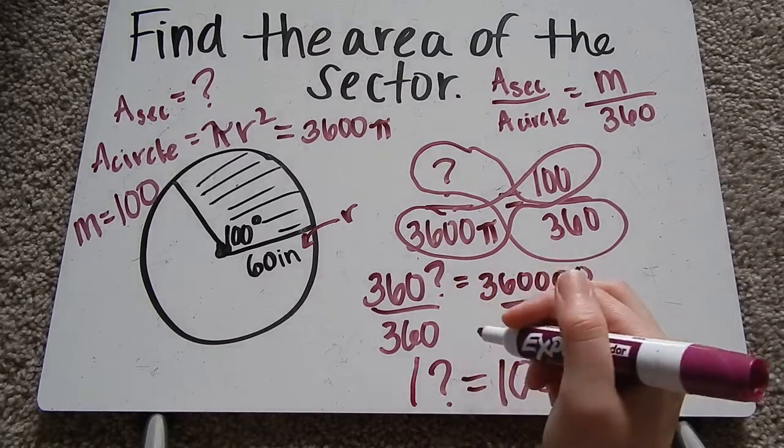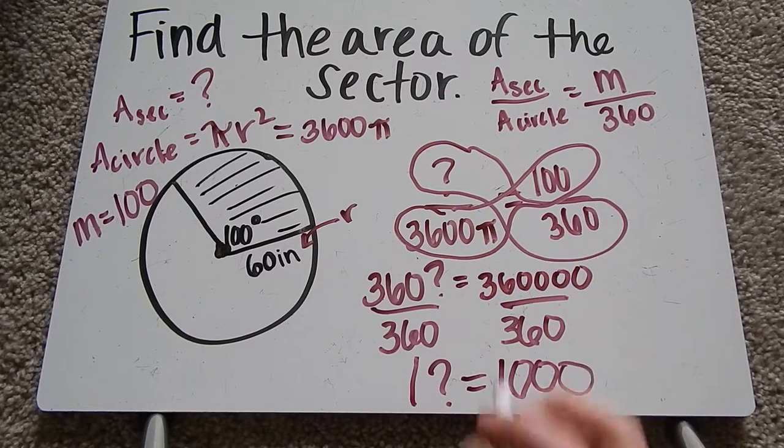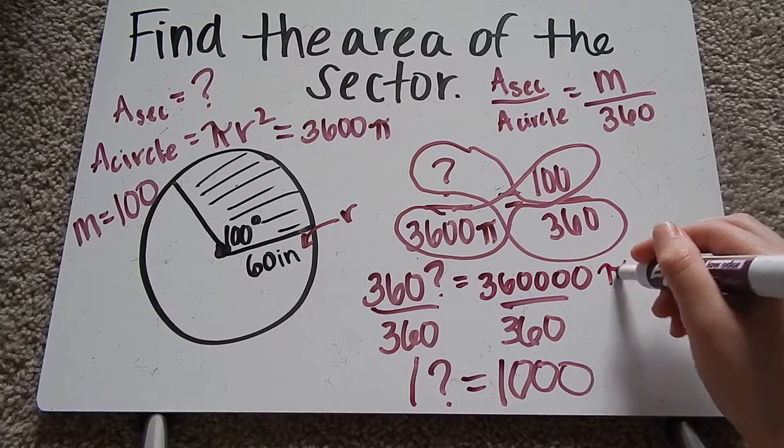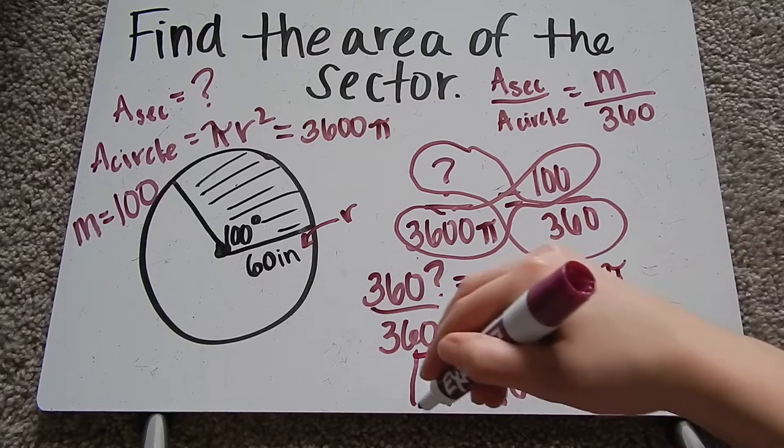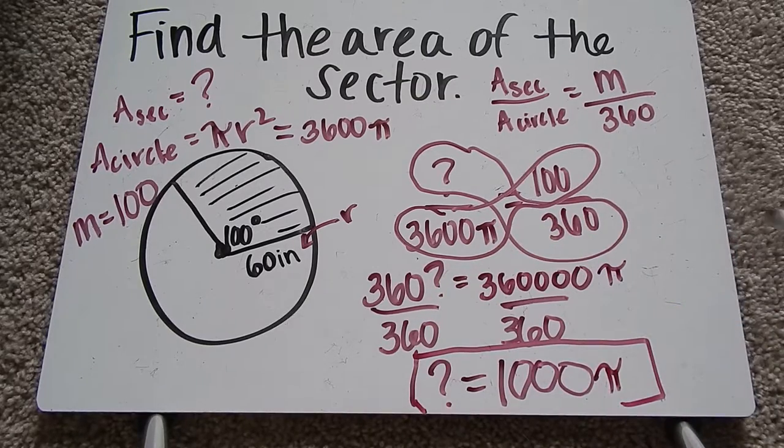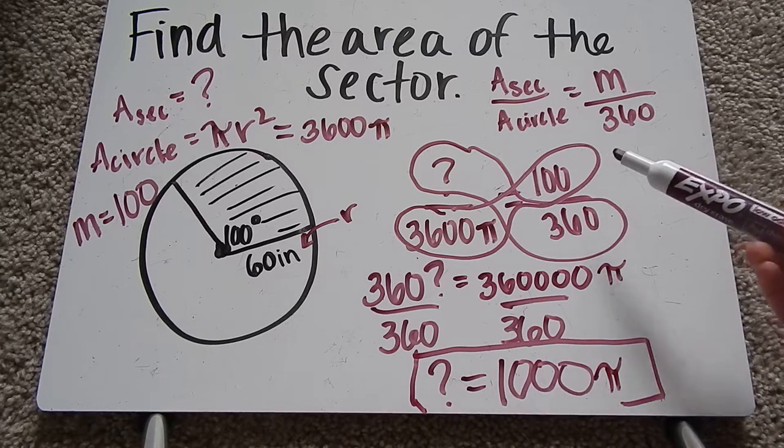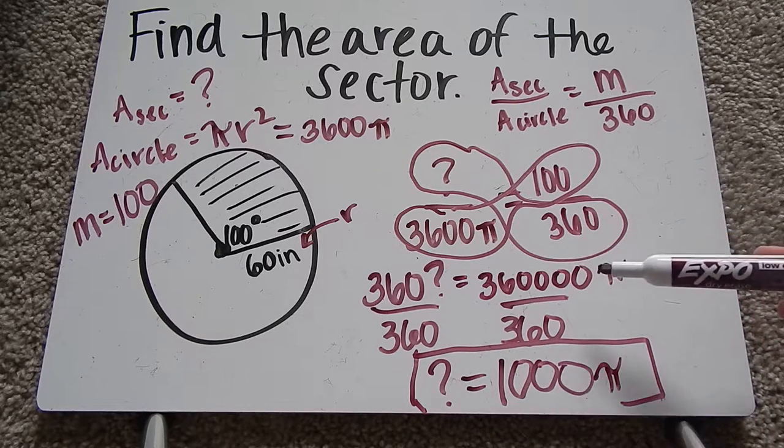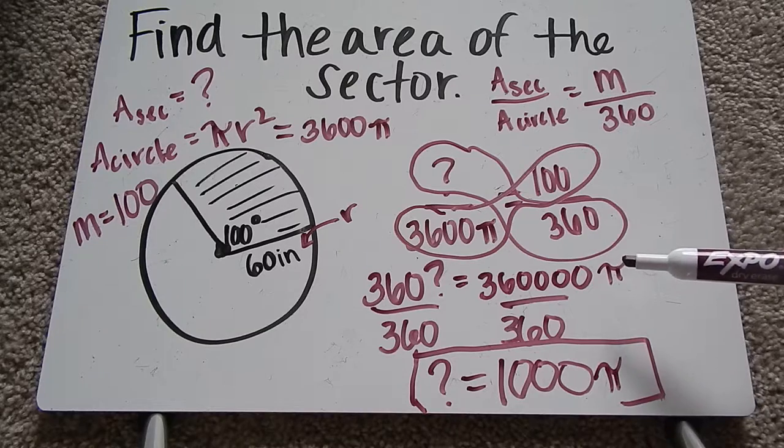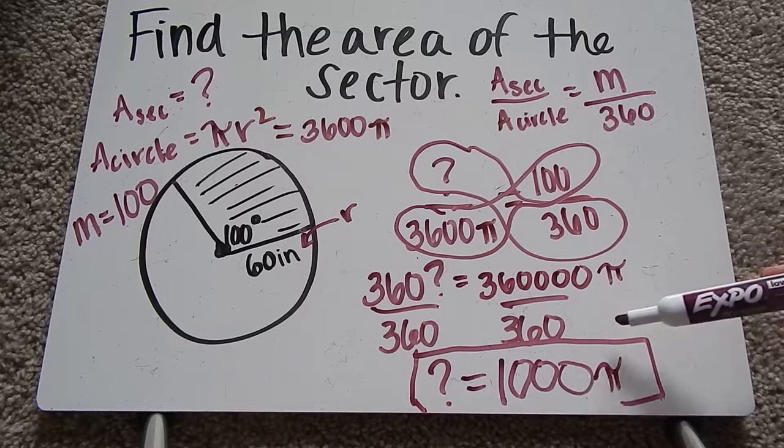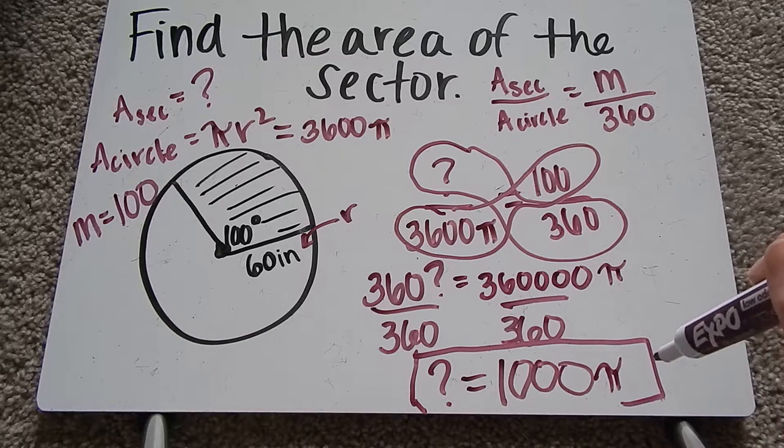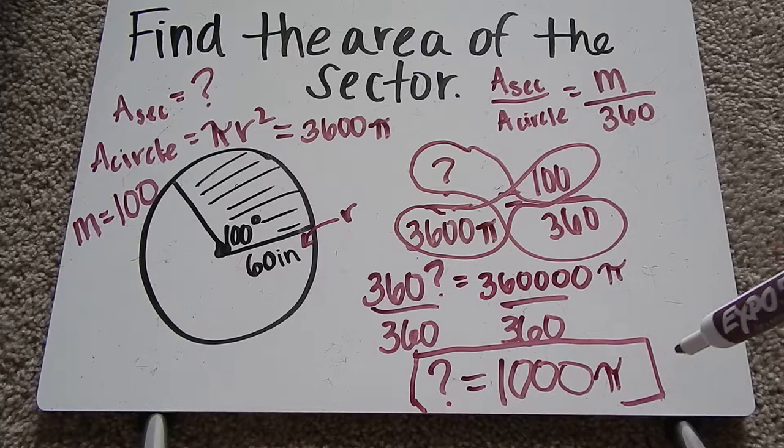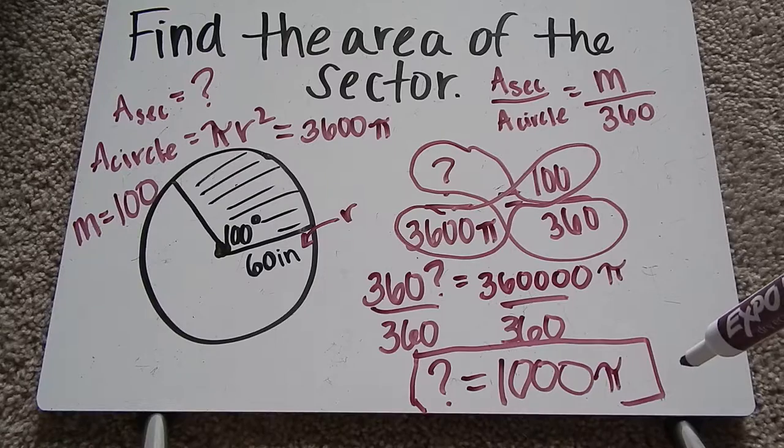I'm sorry, this should be π. And so my area of the sector is 1,000π. So when we multiply 3600π times 100, we get 360,000π. Then we can divide by 360, and I get 1,000π. That π is going to stay on there, and that's part of my answer to the area of the sector.